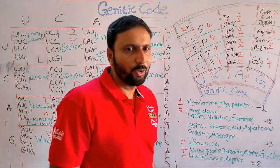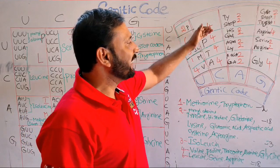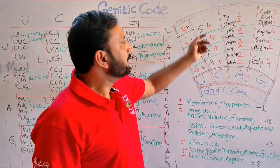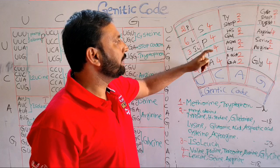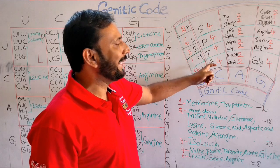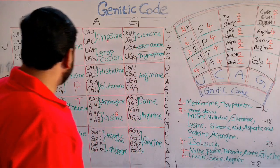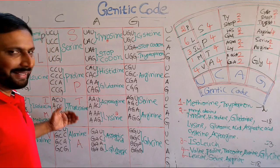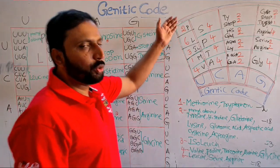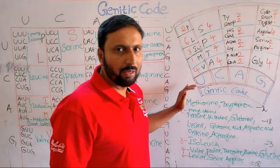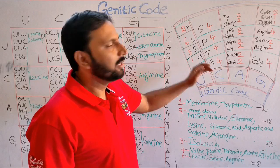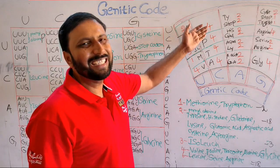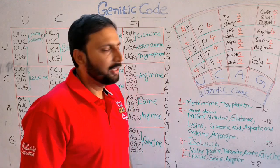Then you go to the second row. I am giving the code S-P-T-A: serine, proline, threonine, alanine. The pattern here is 2, 6, 3, 1, 4, and all are 4s for this row. The code for the first row is P-L-I-M-V and here S-P-T-A.